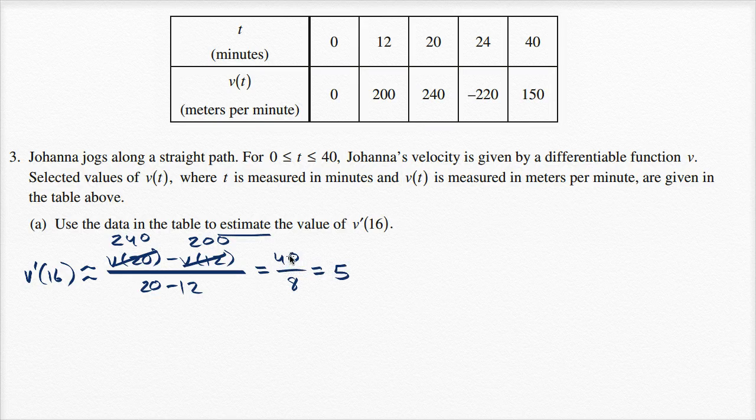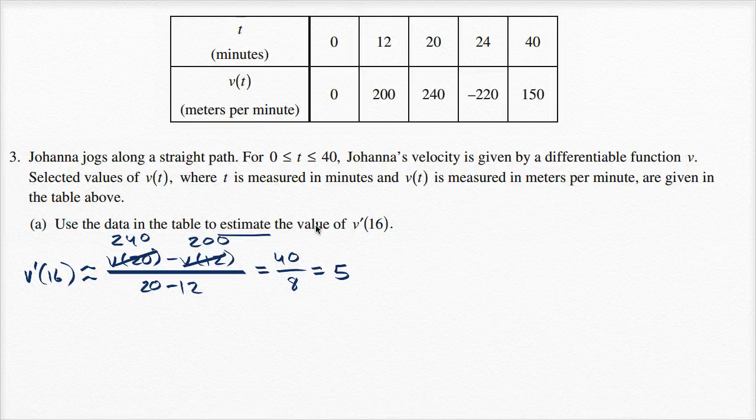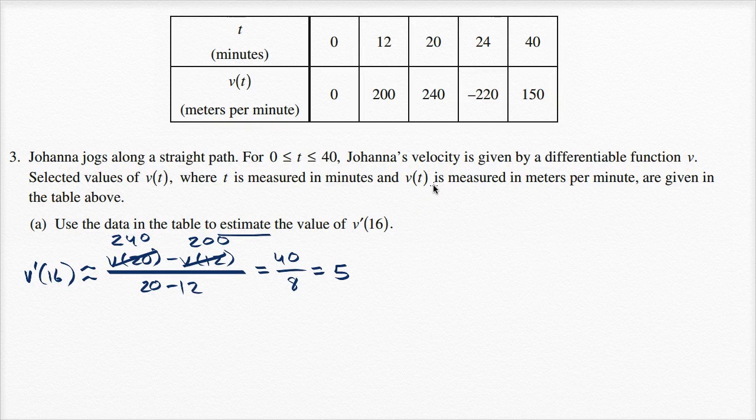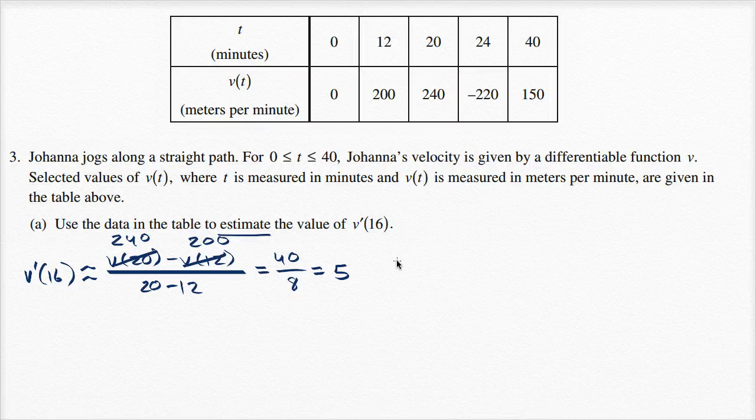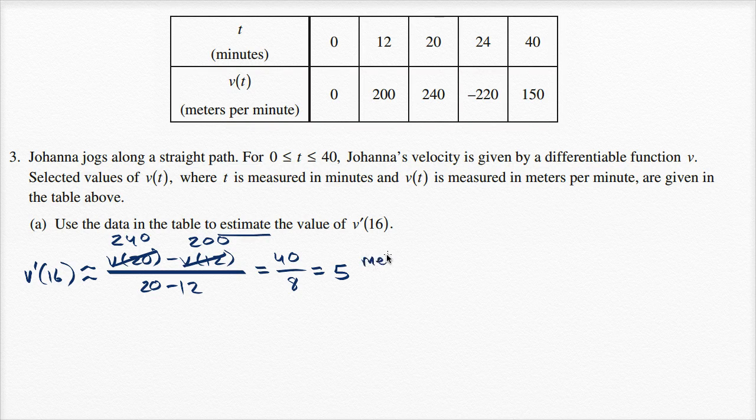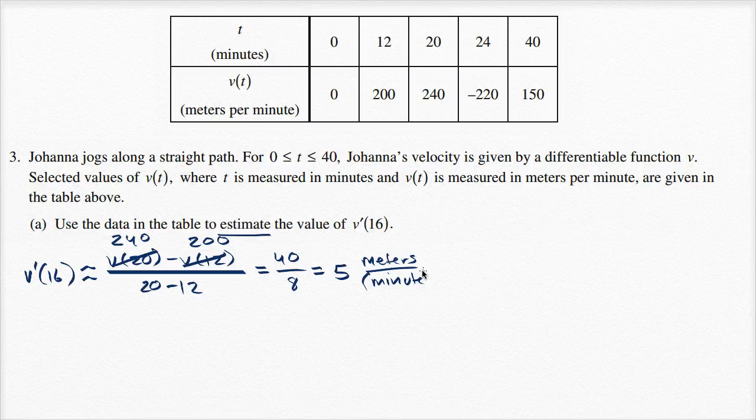And we would be done. For good measure, it's good to put the units there. So this is our rate, this is how fast the velocity is changing with respect to time. So the units are going to be meters per minute, per minute. So we could write this as meters per minute squared, meters per minute squared. And we're done.